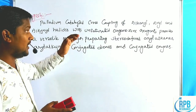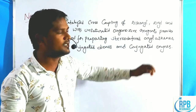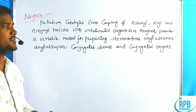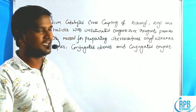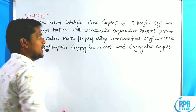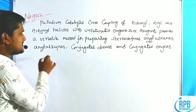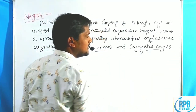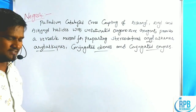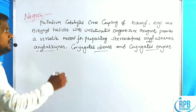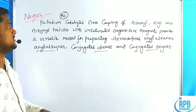With unsaturated organozinc reagents, this provides a versatile method for preparing stereo-defined aryl alkynes, aryl alkenes, alkynes, conjugated dienes, and conjugated enynes. In the presence of a palladium catalyst — and in advanced synthesis, not only palladium but also nickel can be used — palladium or nickel catalyzed reactions.